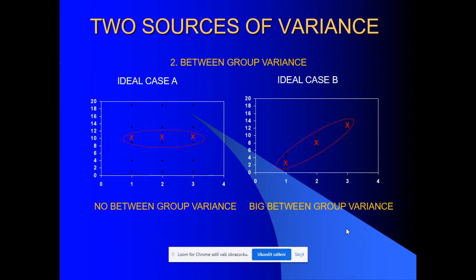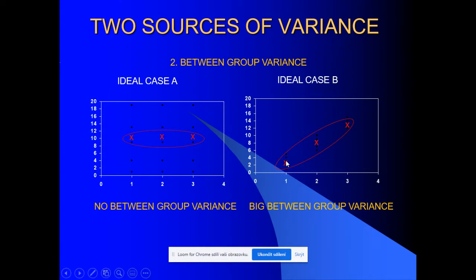For ideal case A, all means are the same. If I compute variance for these individual means, it would be zero — so there is no between-group variance. For ideal case B, if I compute means — represented by red crosses — the variance of these individual group means is quite a big value. So it would be large between-group variance. This is the logic of analysis of variance: we divide variance into two sources — between-group and within-group variance.